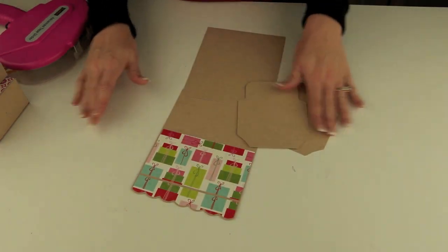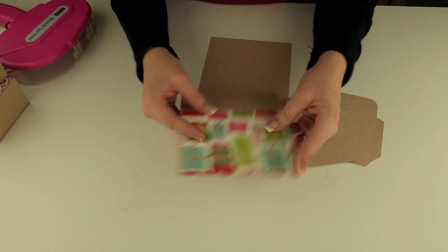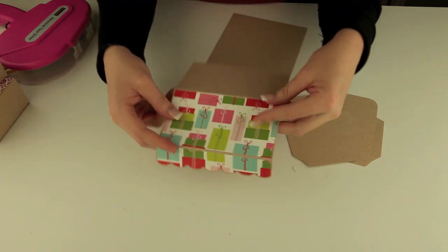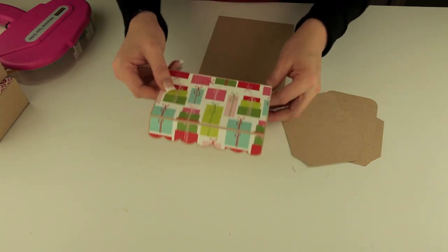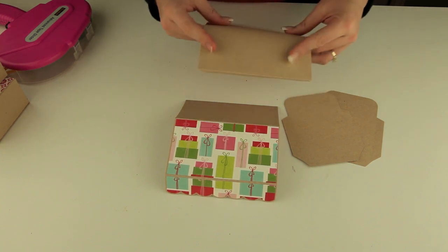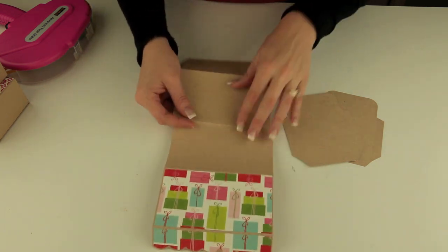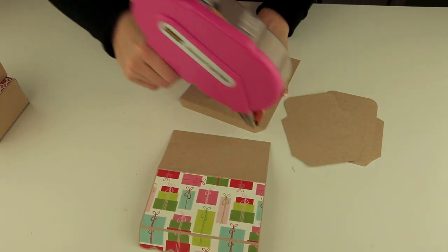The third box is assembled exactly the same way. The pieces are just larger. This is your front and your top and then your back here. We'll go ahead and glue these two pieces together here.